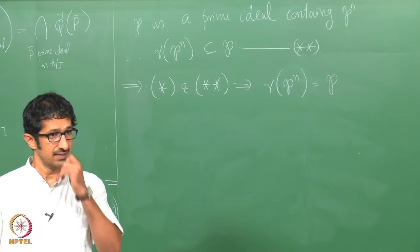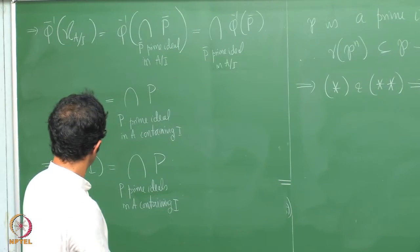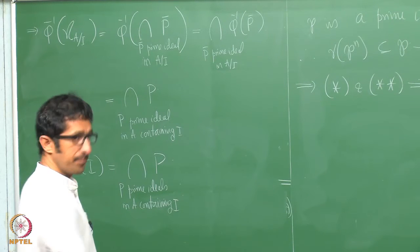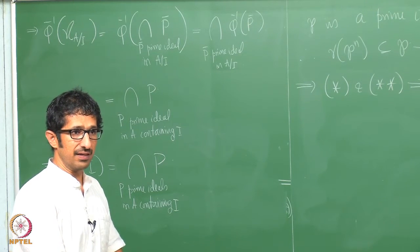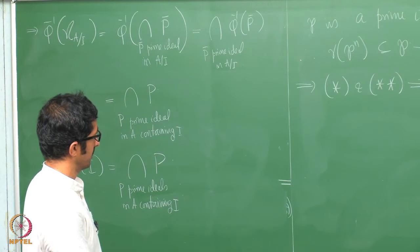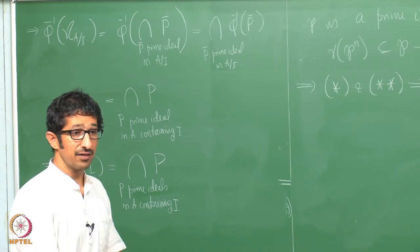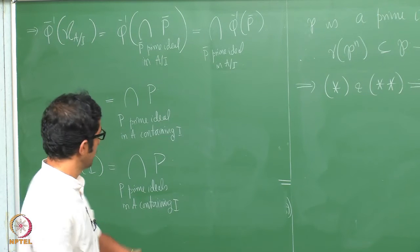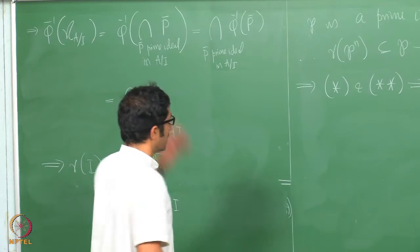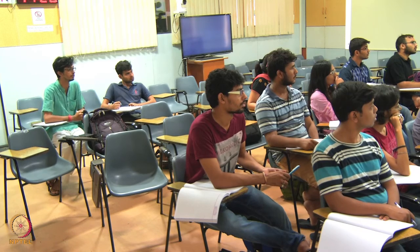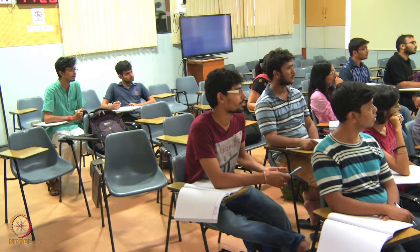Alternatively, using the property that radical(IJ) equals radical(I∩J), radical of p^n equals radical of p. And radical of p is the intersection of all prime ideals containing p. Since p is itself a prime ideal containing p, radical of p equals p. So radical of p^n equals p.